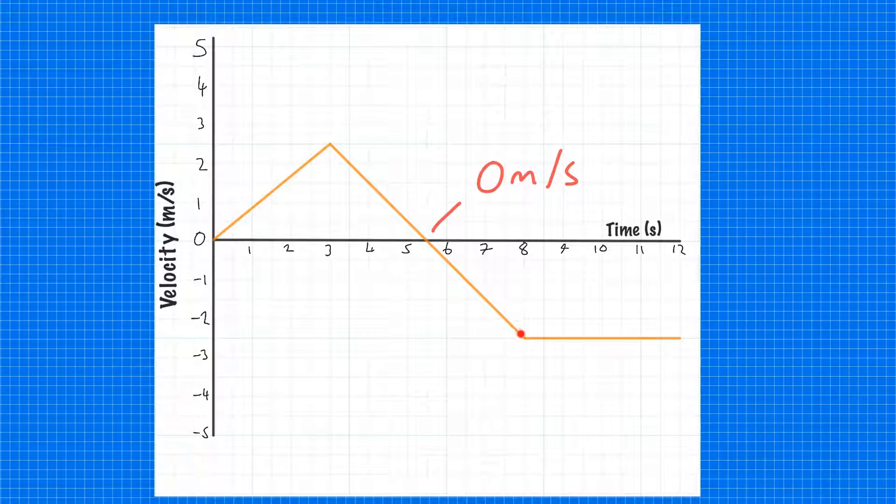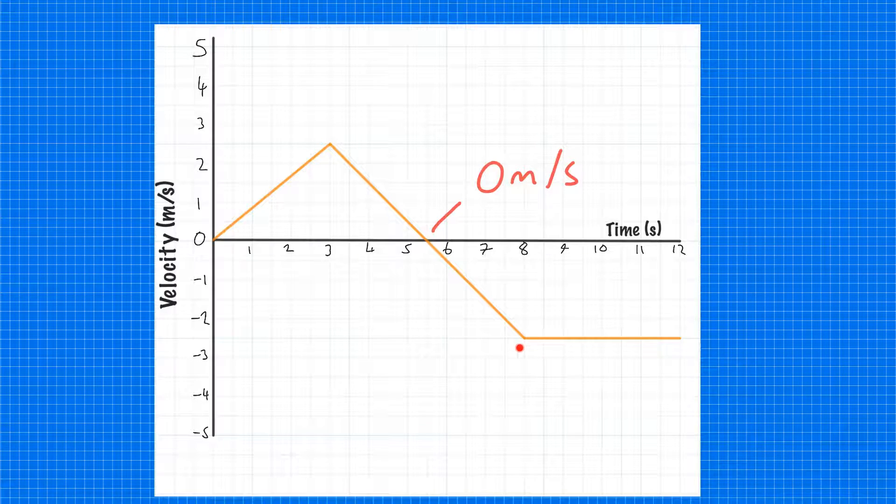What this means when it goes negative is that it's accelerating in the opposite direction. When it gets to this point, it reaches a constant velocity in the opposite direction of 2.5 metres per second.